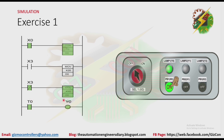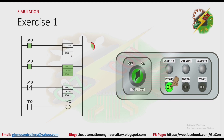That will cause the normally open contact of D0 here to turn on, and that will make Y0 to turn on. Now after turning on the selector switch, the value of D0 is now 20, which makes the timer preset value 2 seconds. Let's press PB1 — the timer is activated after 2 seconds and that will make Y0 to turn on.